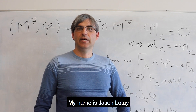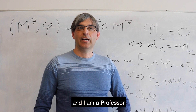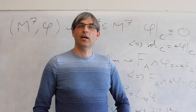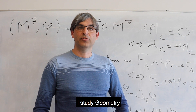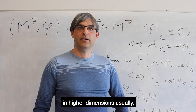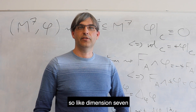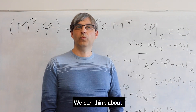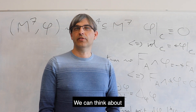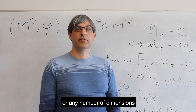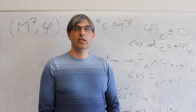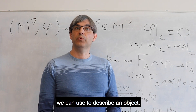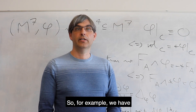My name is Jason Lotte and I am a professor of geometry. I study geometry in higher dimensions usually, so like dimension seven, as in the stuff behind me. We can think about seven-dimensional things or any number of dimensions by thinking of different characteristics we can use to describe an object.